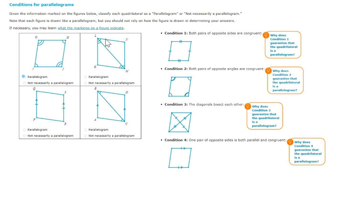We see that L and M are marked the same. We can see that when those are bisected, we have this smaller angle here, matching this angle, but that doesn't meet any of our four conditions. So we're going to have to mark not necessarily a parallelogram.